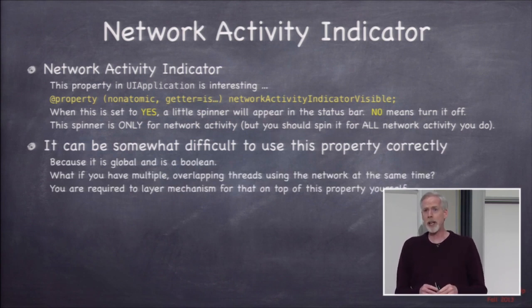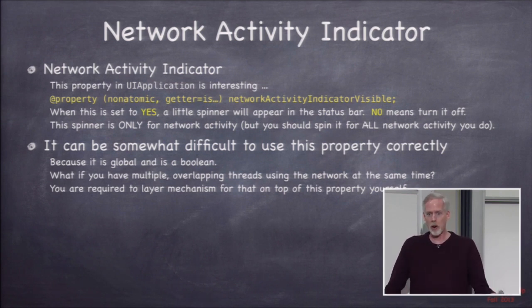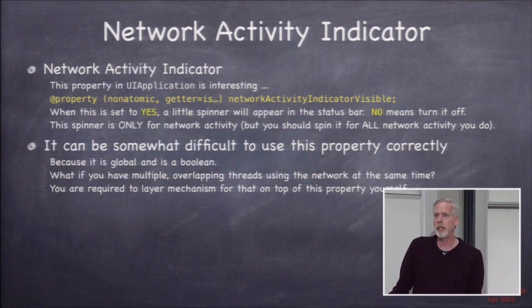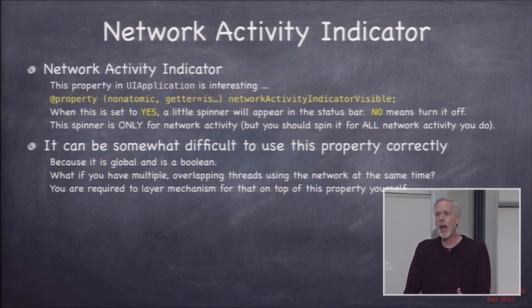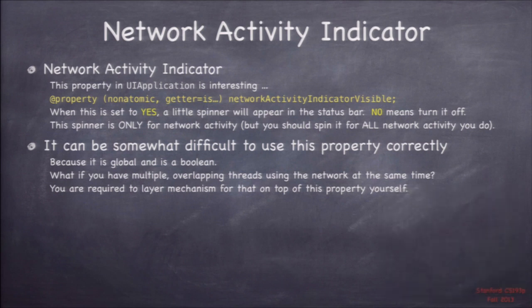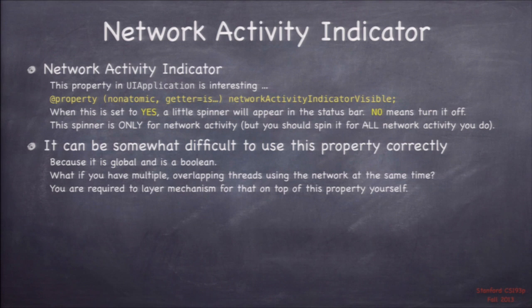That spinner is either on or off — it's totally your responsibility to turn it on and off. It's a bit difficult to deal with because it's global: it's on UIApplication, so all threads in your application use this same spinner, and it's a Boolean, not a push/pop or count. So imagine you fire off a big Flickr fetch that takes 10 seconds and turn the indicator on. Then in another thread you fire off a little fetch that takes one second — it turns it on, finishes, turns it off. Now it's off, but the 10-second one is still running. So it's totally up to you to put a mechanism in your app to deal with that unfortunate simplicity of API.